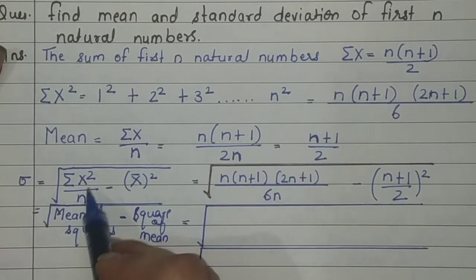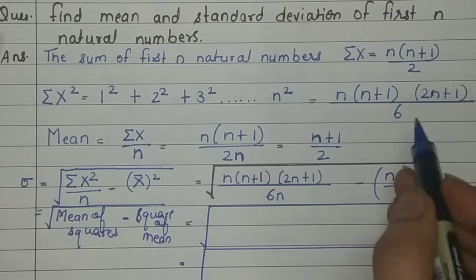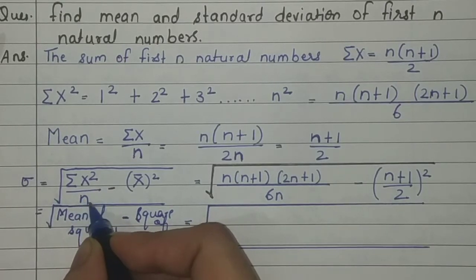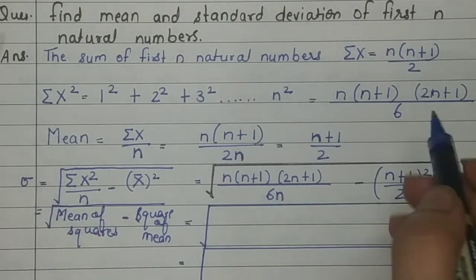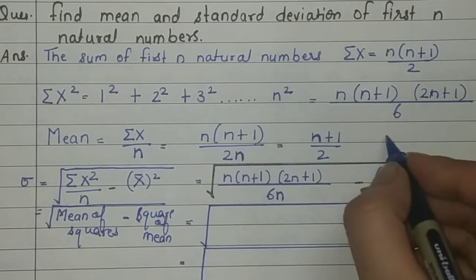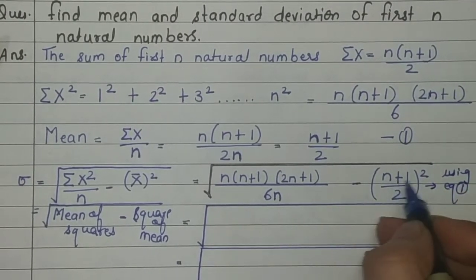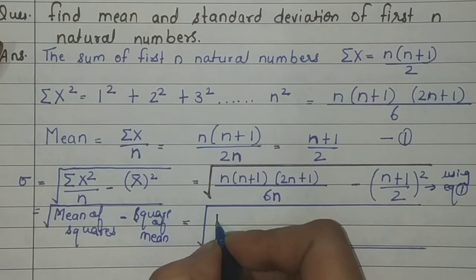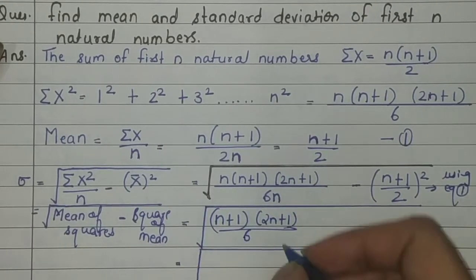Now substituting: Σx² = n(n+1)(2n+1)/6, and there is already an n in the denominator from dividing by n. So Σx²/n = (n+1)(2n+1)/6. Then we subtract the square of mean, which from Equation 1 is [(n+1)/2]². The n cancels out from numerator and denominator.